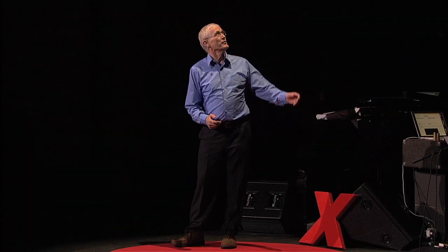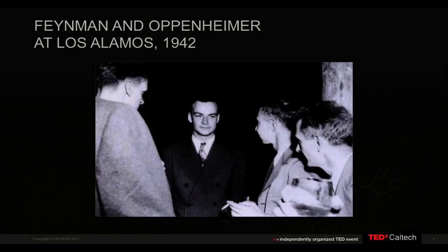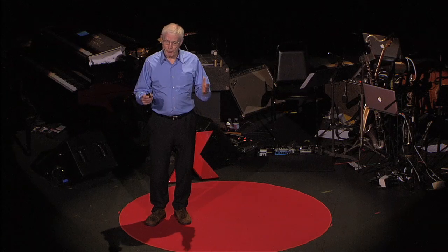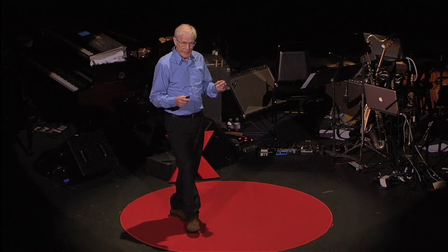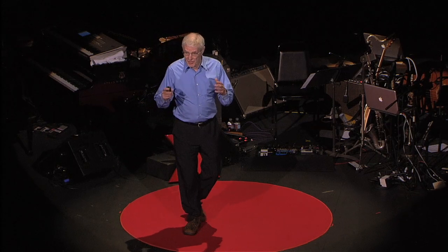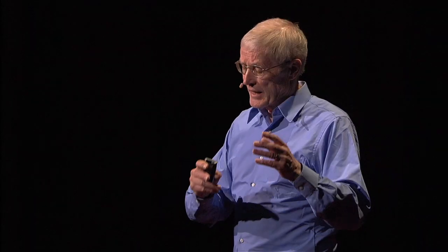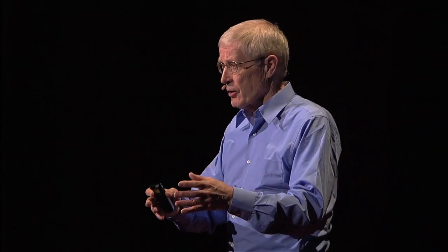The first story dates to the days of the Manhattan Project, in Los Alamos with Oppenheimer and the others, where they were inventing the atomic bomb. And Feynman was put in charge of the IBM team. It was in the days before computers — they had tabulators, calculators, sorters, collators, and so on, but they didn't have computers.